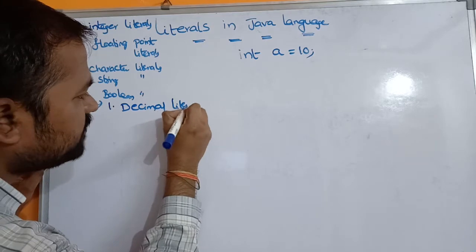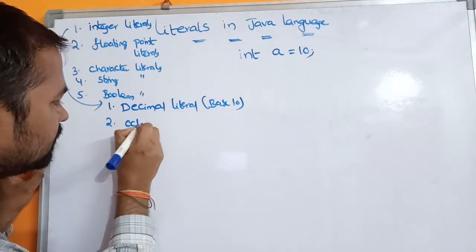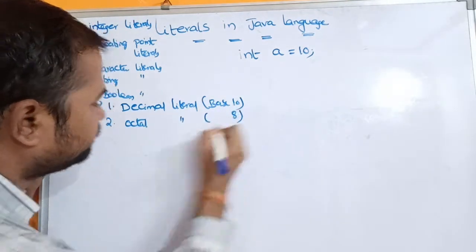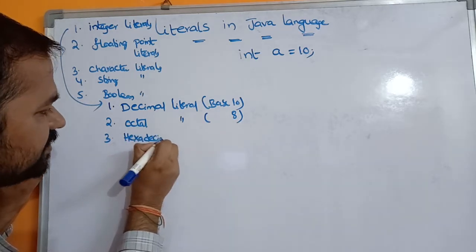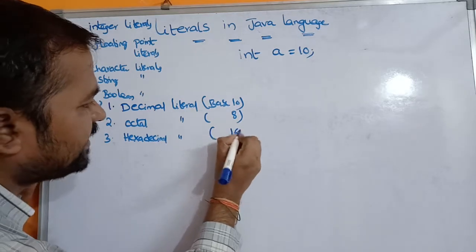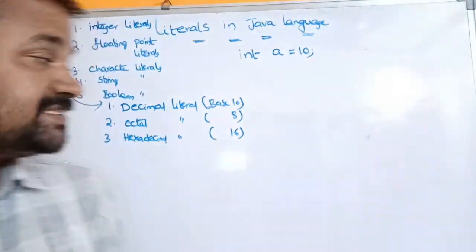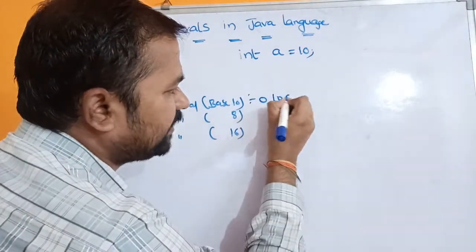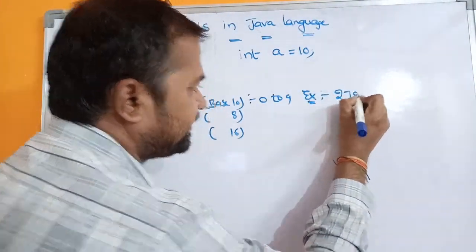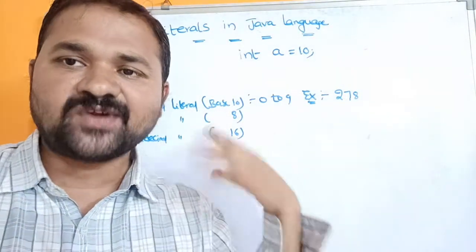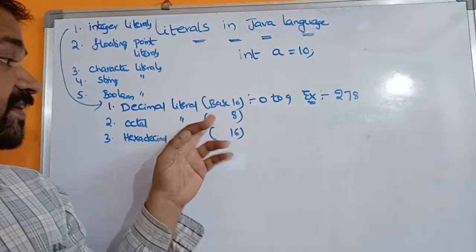Decimal means base 10, octal means base 8, and hexadecimal means base 16. The first type, decimal literal, allows digits from 0 to 9. For example, 278 is a decimal literal because it uses digits from 0 to 9.